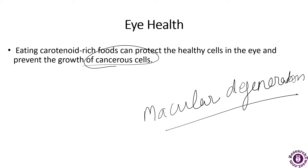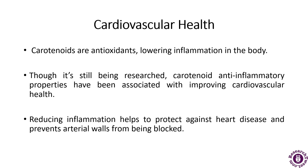The carotenoids lutein and zeaxanthin, found in the retina, can help absorb blue light. Studies have shown that at least six milligrams of lutein in your diet per day can decrease your risk of developing macular degeneration by 43 percent.